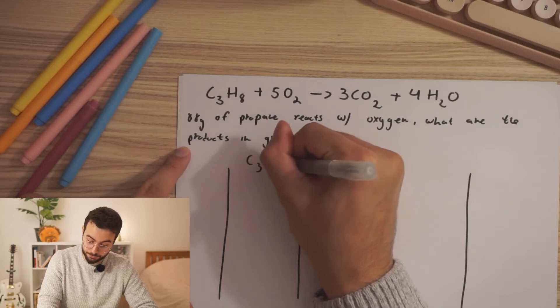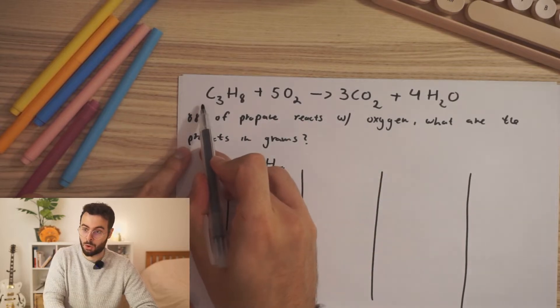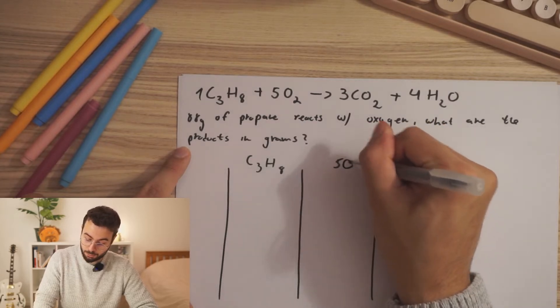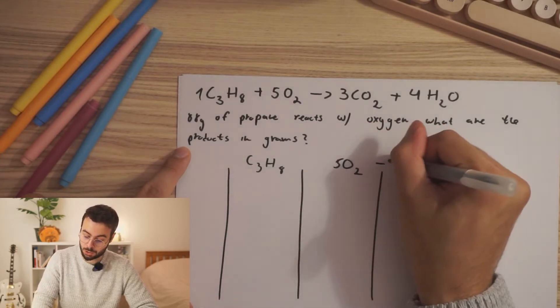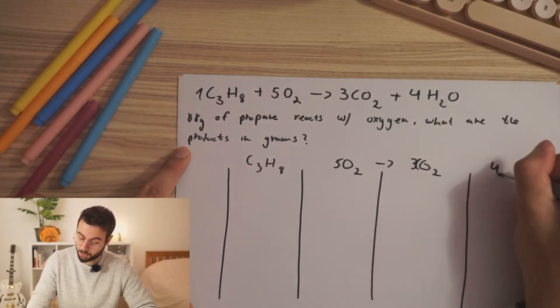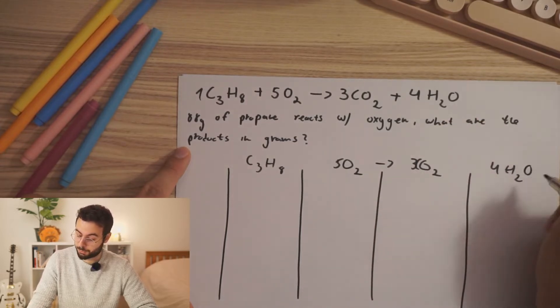So we'll have propane over here. So no coefficient here, so it's one. We will have five oxygen, which will give us three carbon dioxide, and four molecules of water.